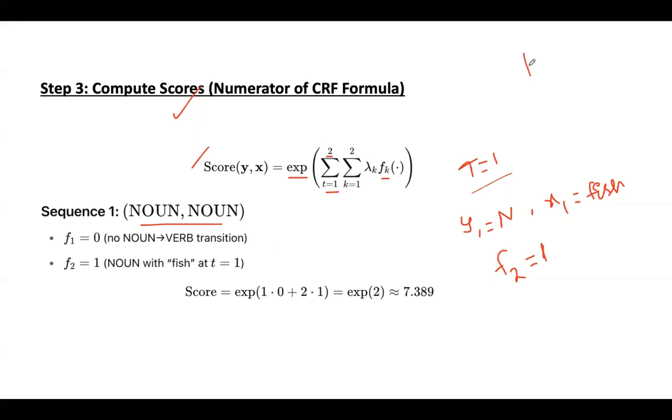Now, assume that we are at time step 2. At time step t equal to 2, y1 value is noun, and y2 value is also noun. So there is no noun to verb transition. There is noun to noun transition here.